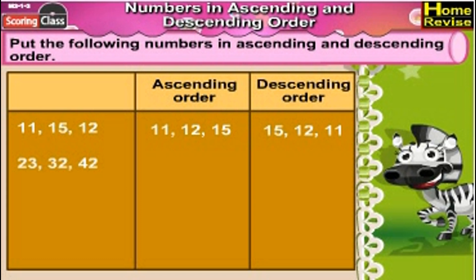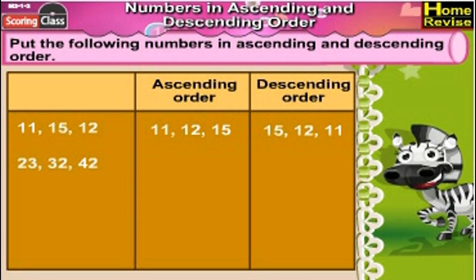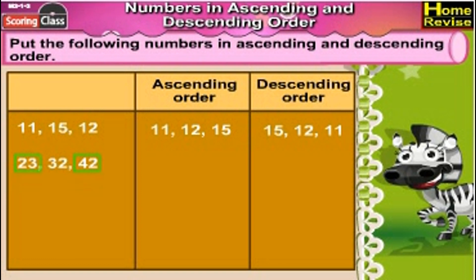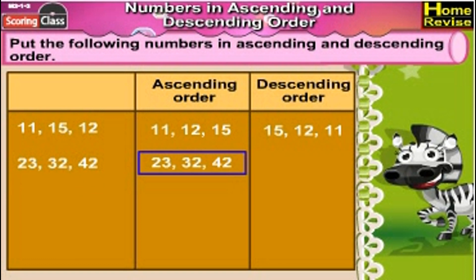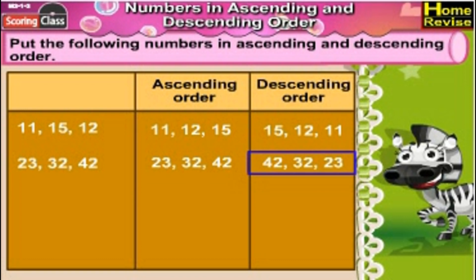Next set: 23, 32, 42. Now which one is the smallest? 23. And the biggest? 42. So the ascending order is 23, 32, 42. And the descending order would be 42, 32, 23.